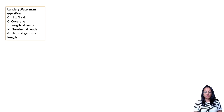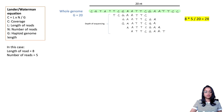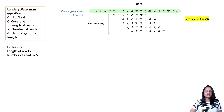To calculate coverage you can use the Lander-Waterman equation, which uses the length of the reads, the number of reads, and the length of the genome. For example, if we have a genome of length 20 nucleotides, five reads, and each read has a length of eight nucleotides, the coverage for this genome works out to 2x — meaning each base has been sequenced twice on average.